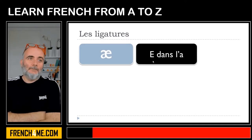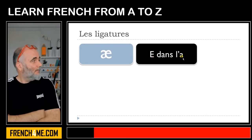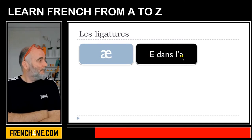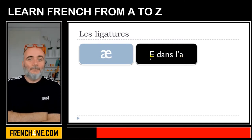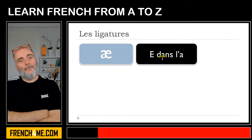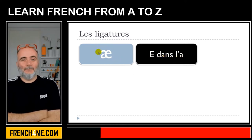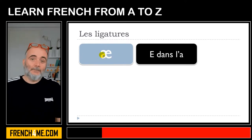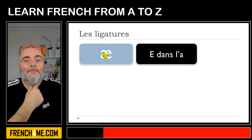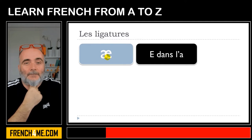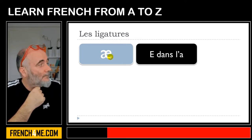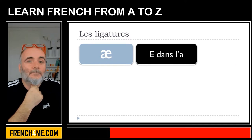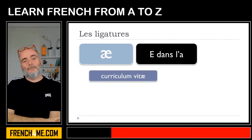So the first one is this — E dans l'a. If you translate directly, it means 'E inside A,' and that's the reason why: if you look carefully, it's only one letter here, like if these two letters were glued or connected. So it's E dans l'a. Let's see a few examples of words that use this E dans l'a.